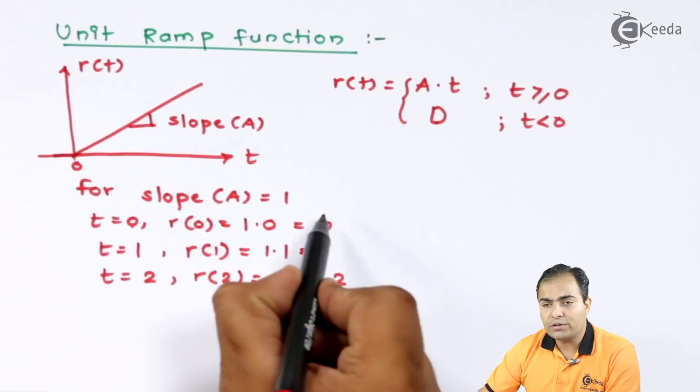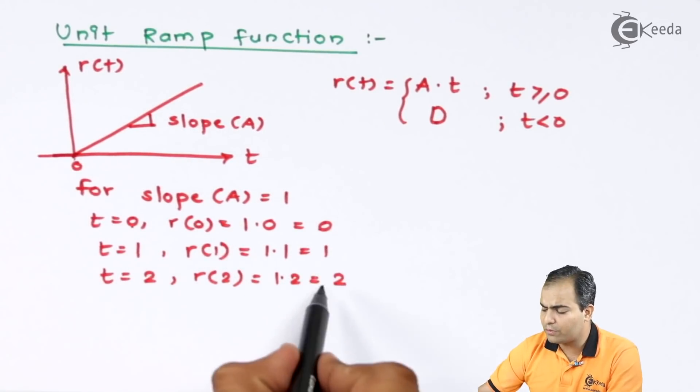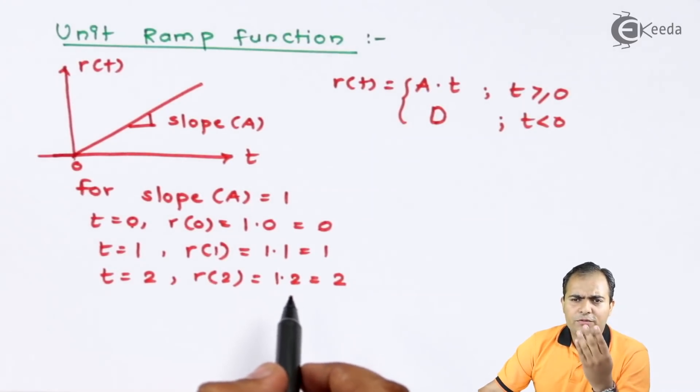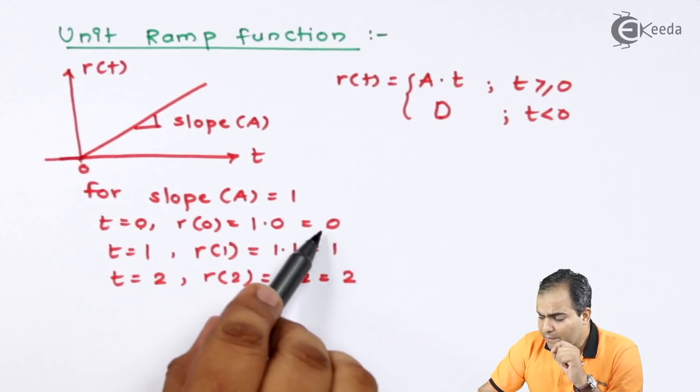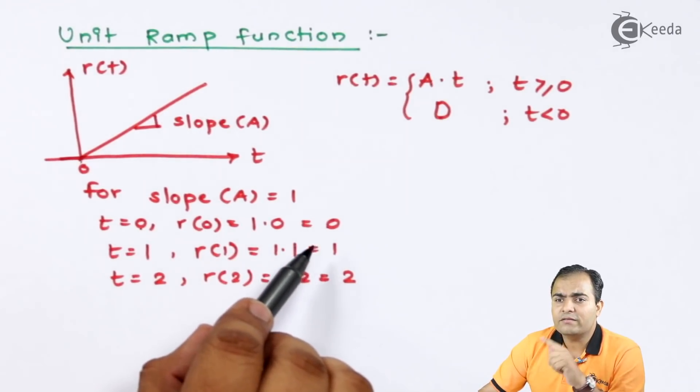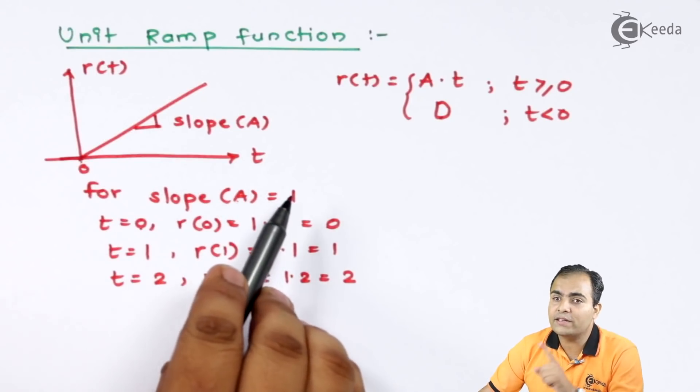Now, at t equals to 0, amplitude is 0. At t equals to 1, amplitude is also 1. For t equals to 2, amplitude is 2 and so on. For t equals to 3, amplitude is also 3. So you can see, this amplitude is increased by 1, 1, 1, just because the slope is having value 1.